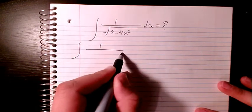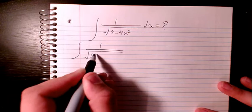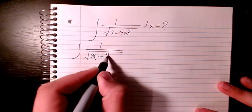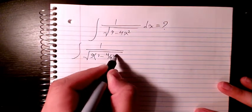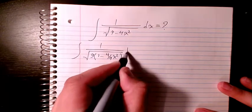So the first thing I need to do is factor 9 in the denominator, so it's going to be 1 minus 4 over 9 x squared dx.